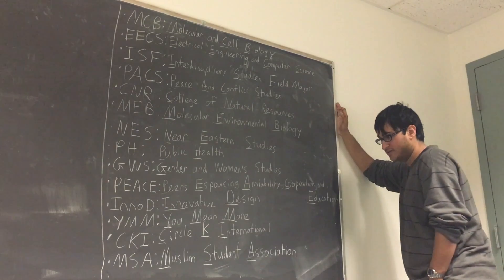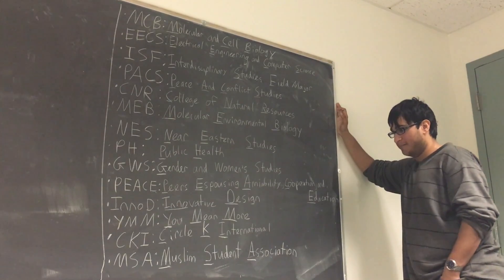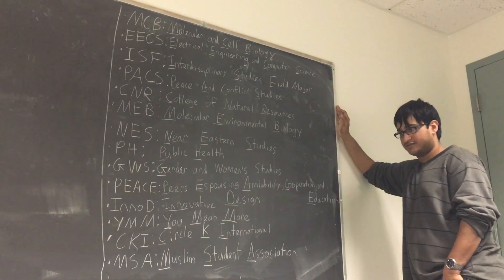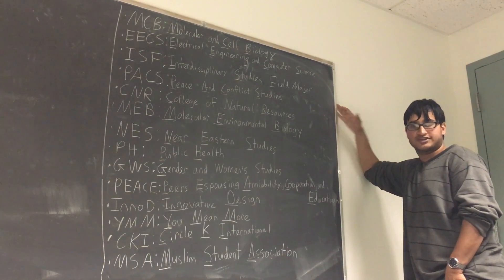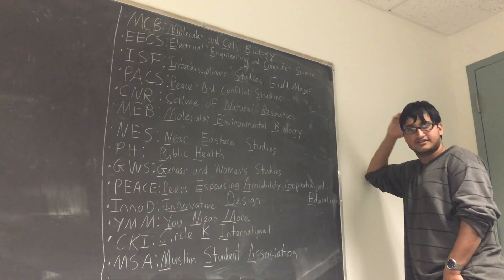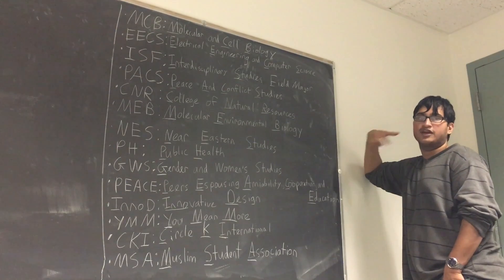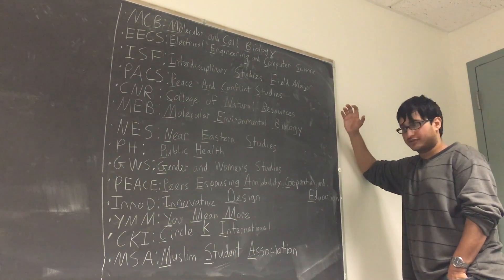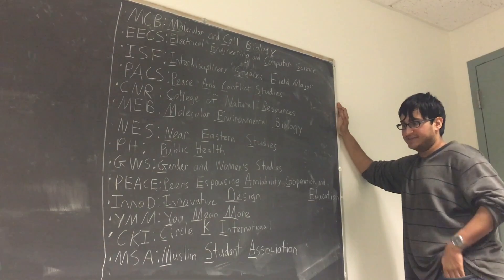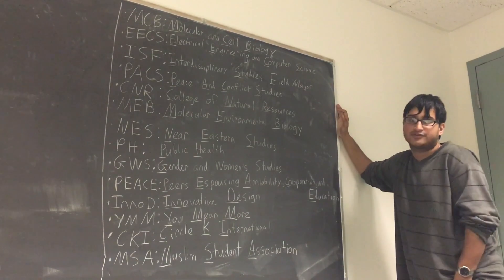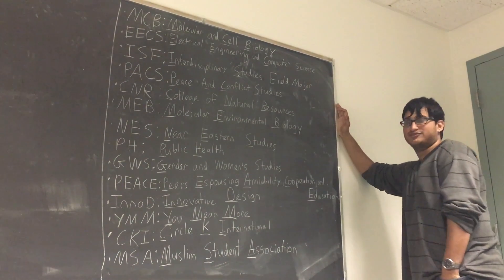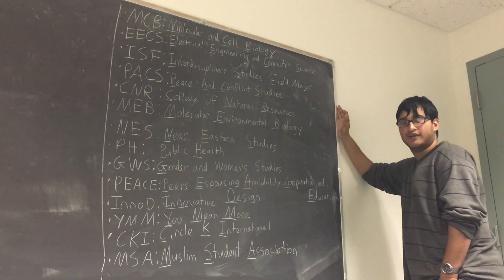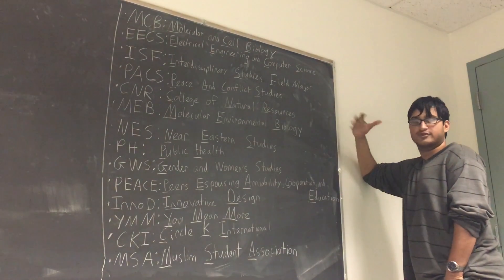CKI is Circle K International — an organization that provides community service and professional development on campus. They're very similar to Cal Rotaract in that they offer community service opportunities and the ability to grow as a leader and build a strong social circle. MSA at the bottom is Muslim Student Association. They're a student association dedicated to meeting the needs of Muslim students, providing religious opportunities and a strong social network.